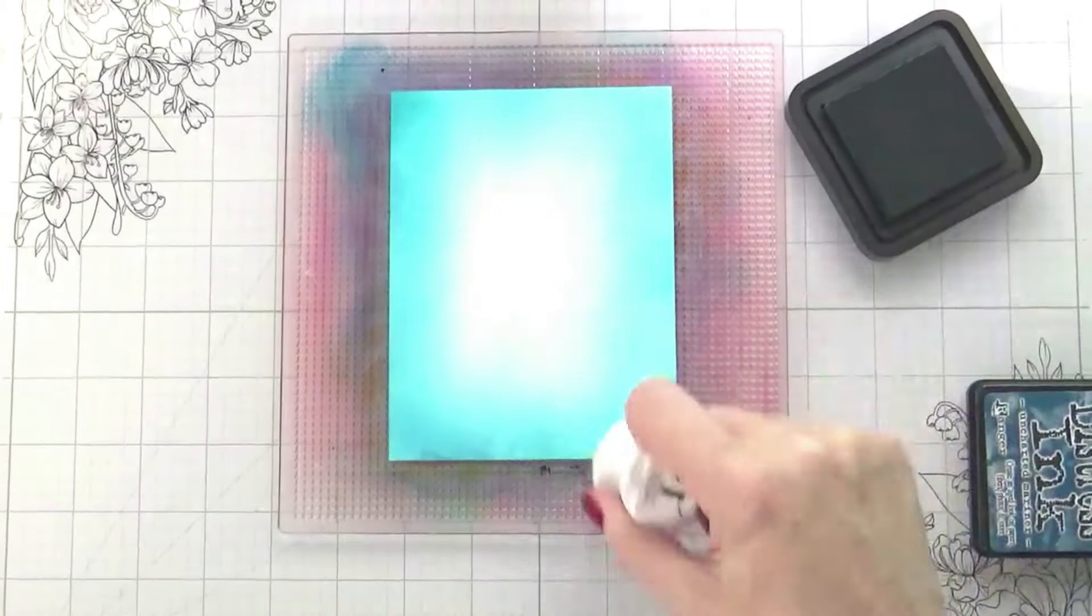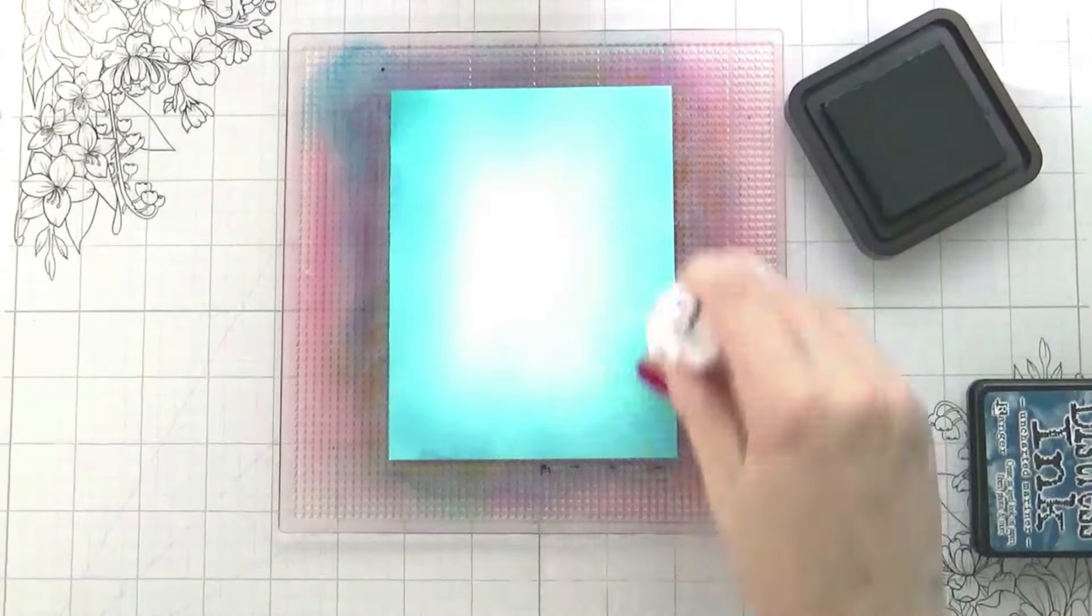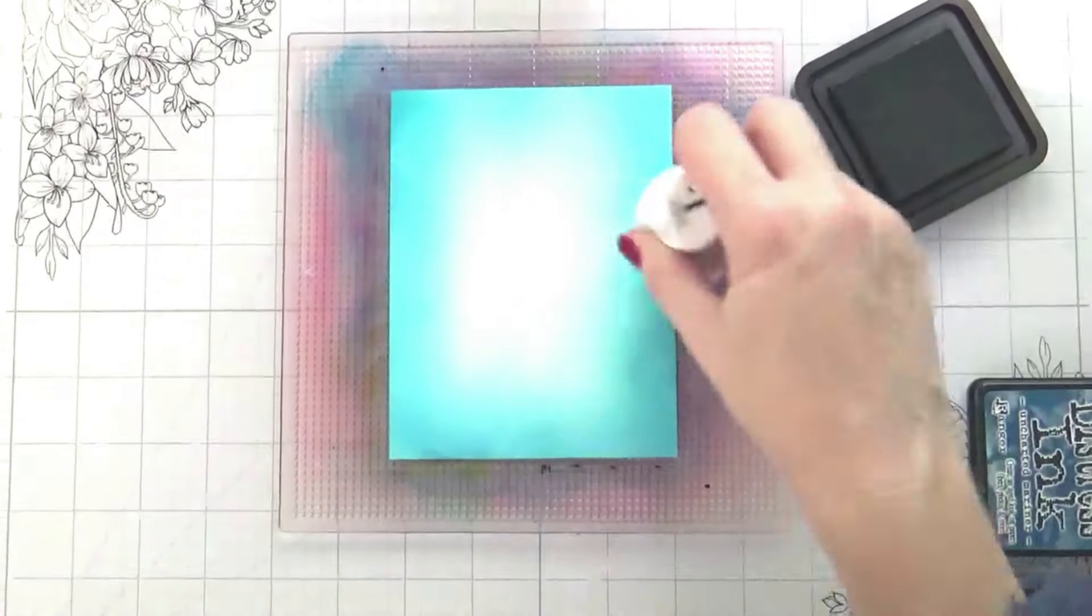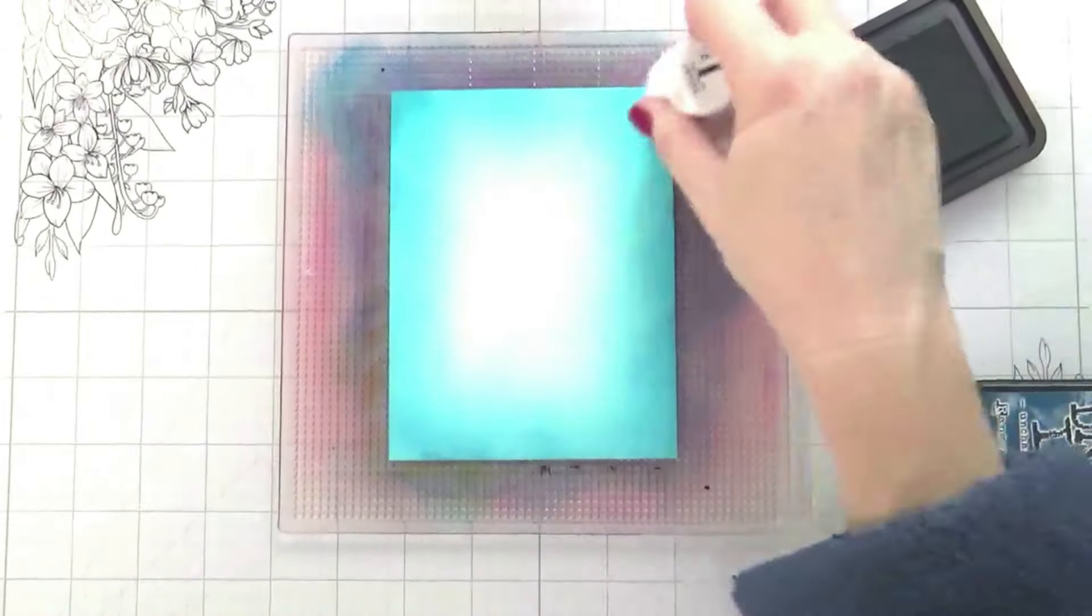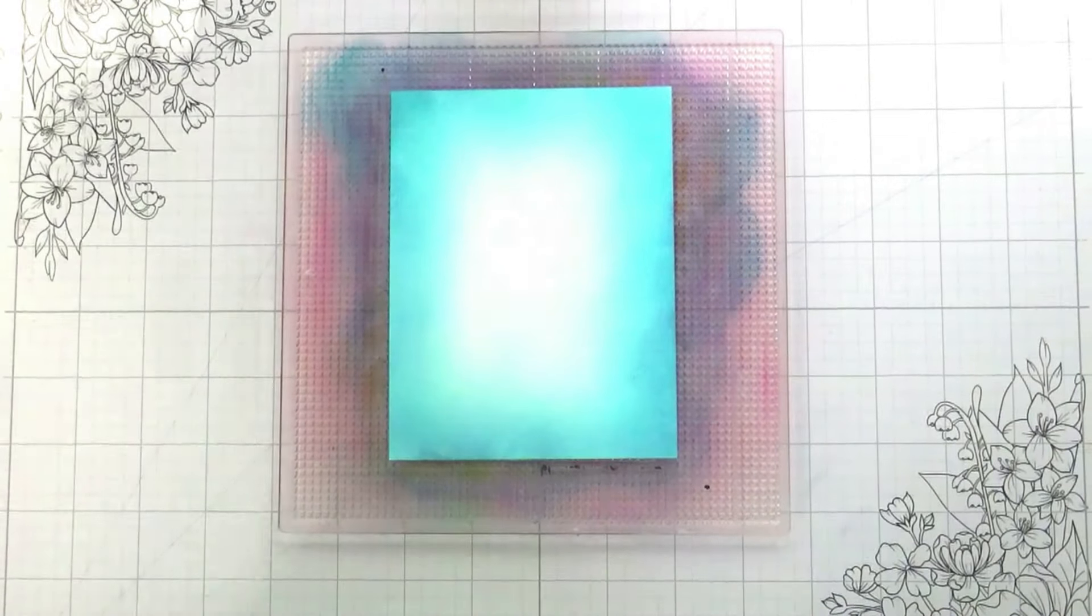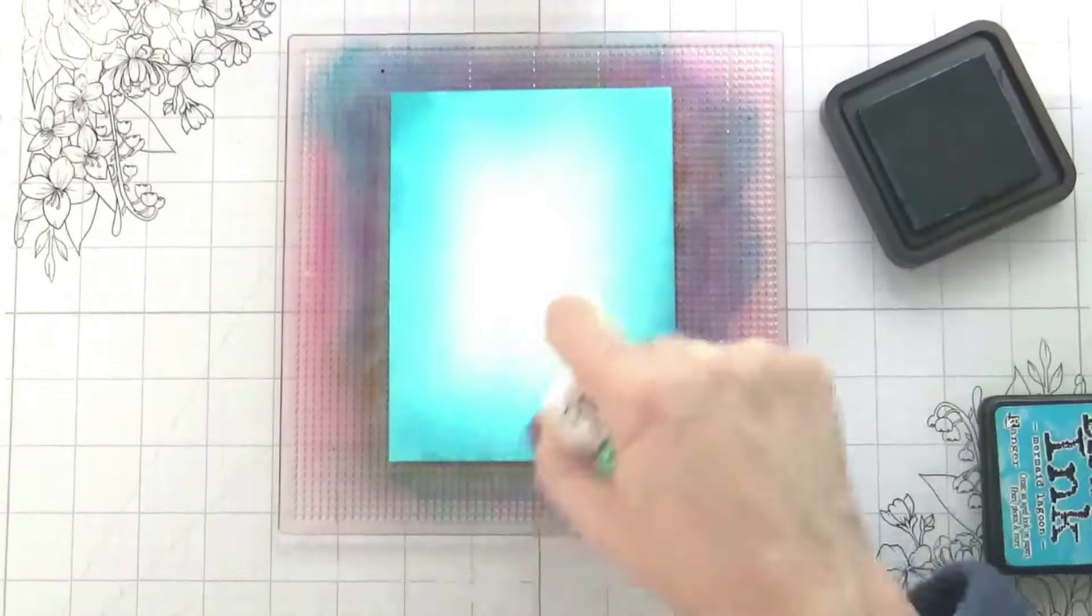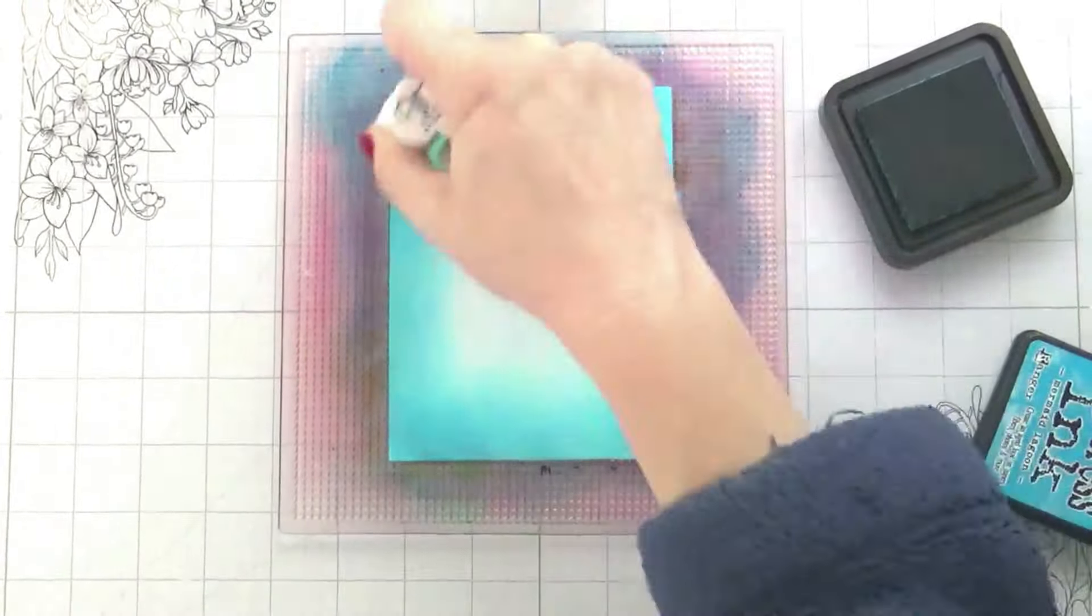For my background, I typically with ink blending like to do two layers of ink blending. I just feel like it gives me the best blend. Sometimes when I'm stenciling I won't do two layers, this time I decided to do them.